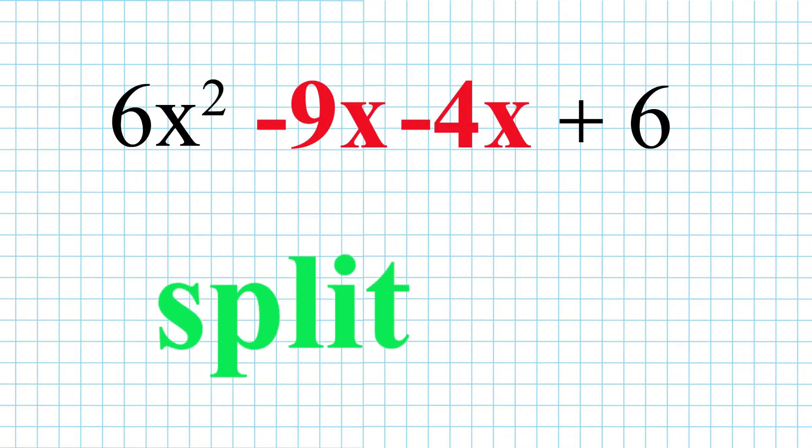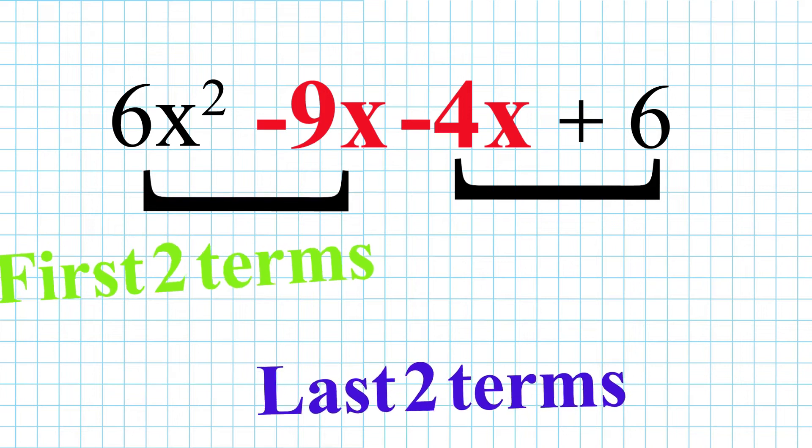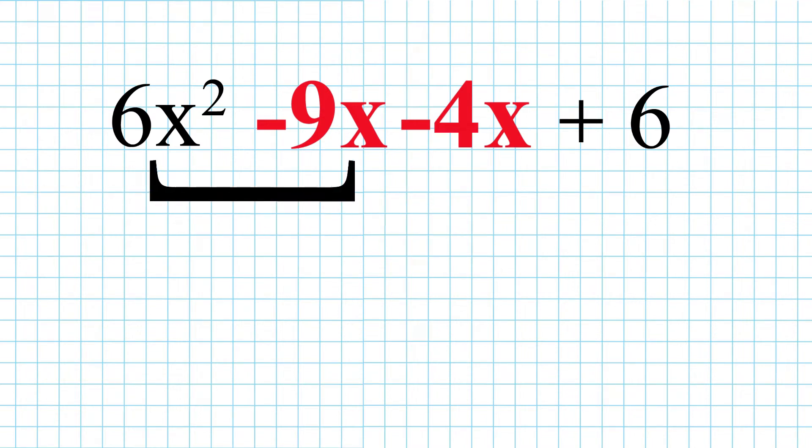As the middle term is now split into such terms that if we make pairs of the first two terms and the last two terms, we will notice that we can use common factoring method for both the pairs. For 6x square and minus 9x, 3 and x can be taken common and written the same way as we used to do in the common factoring method. Which means, 3x would be written outside the bracket and 2x minus 3 inside the bracket.